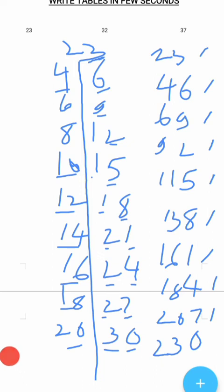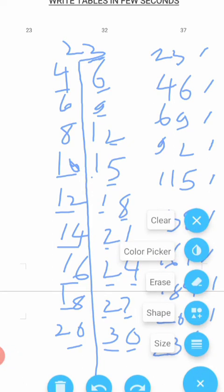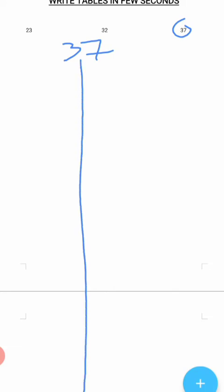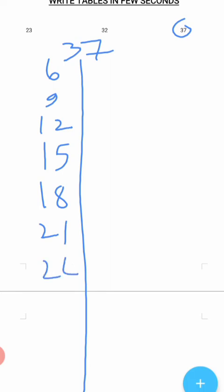Now we will take one more example. We will take the table of 37. So first, take 37. What you have to do is write the tables of 3 and 7 separately.